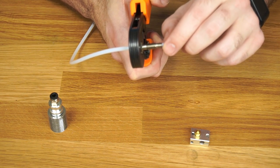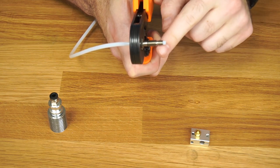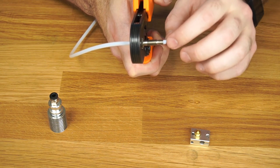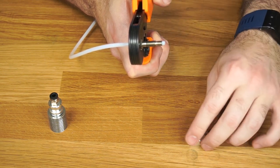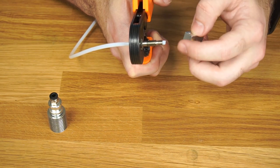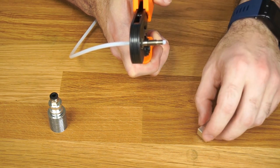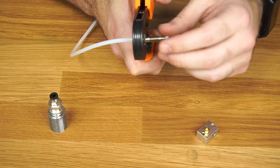We don't want any gaps there because that's going to cause problems. The filament's going to come down and make a little bulge in between the end of the heat brake and the PTFE tubing. And then you're going to get jams and clogs and everything else.